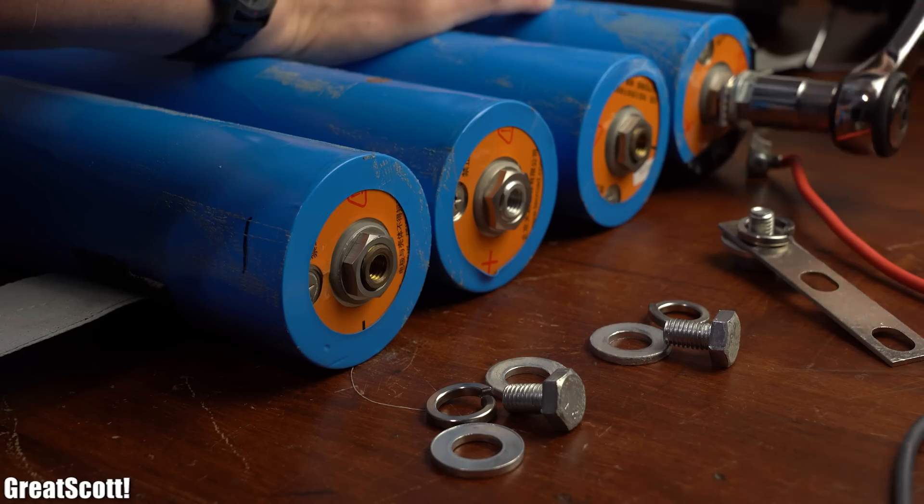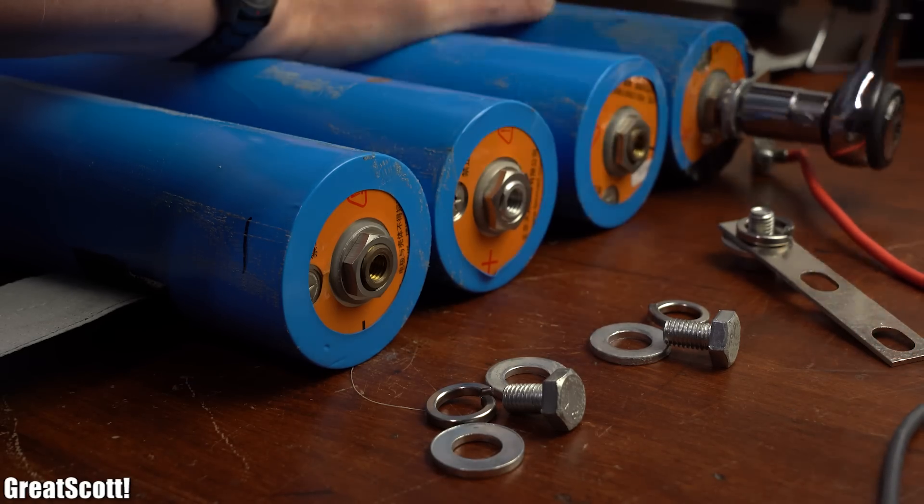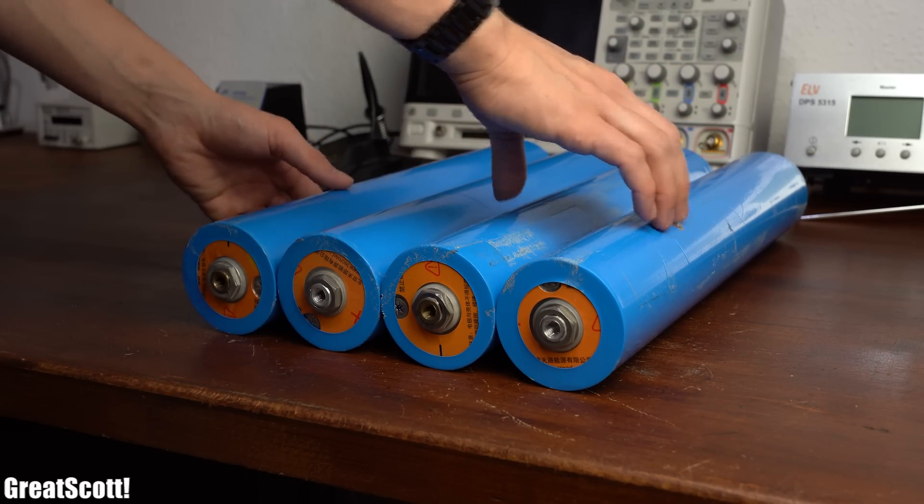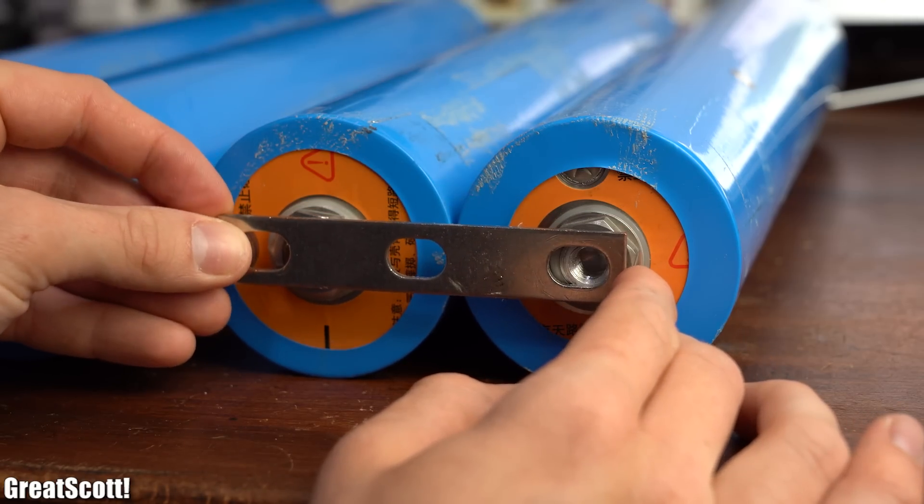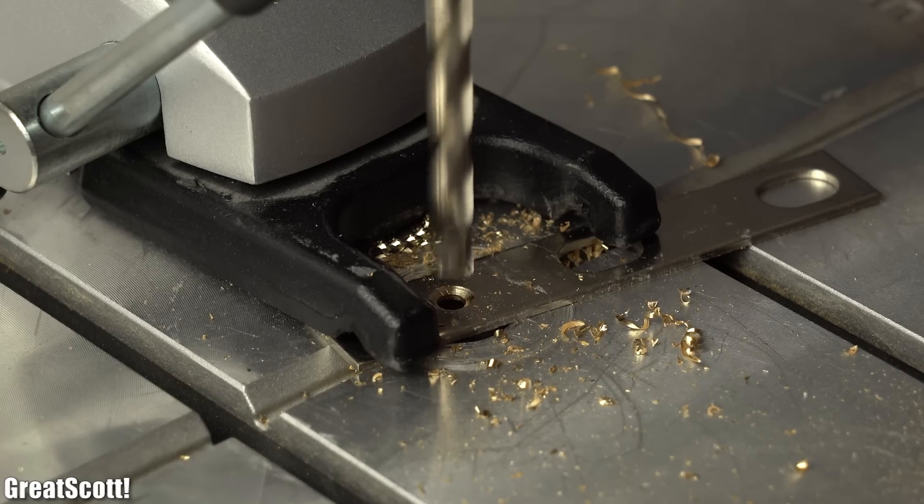I started this build by removing the connectors from my batteries. The reason was that I wanted the batteries as close to one another as possible. And that meant I had to drill a new hole in the connectors. Which was more or less easily done with my drill press.